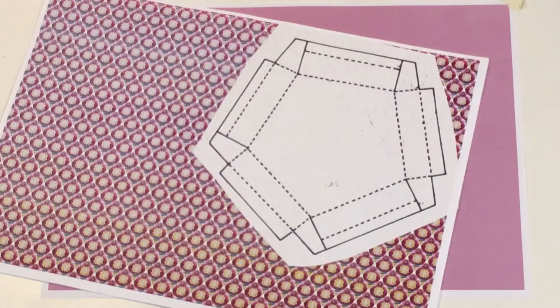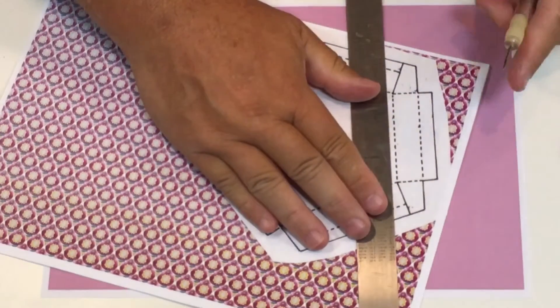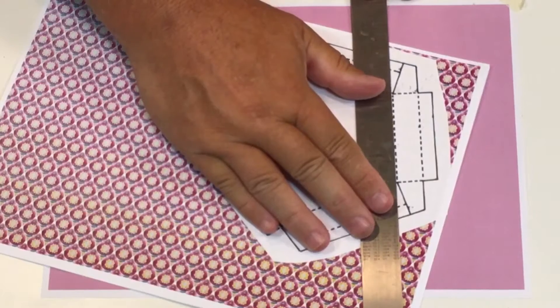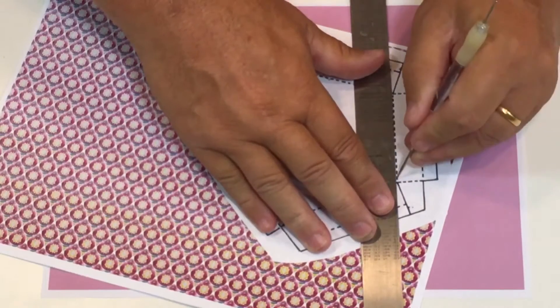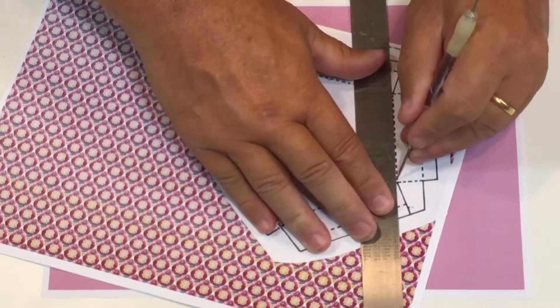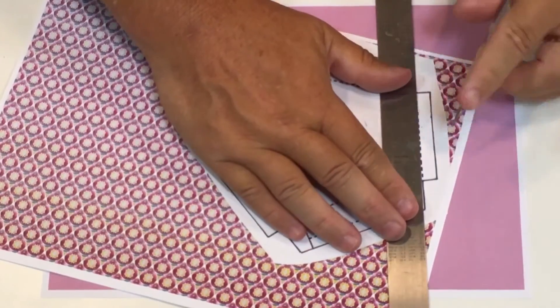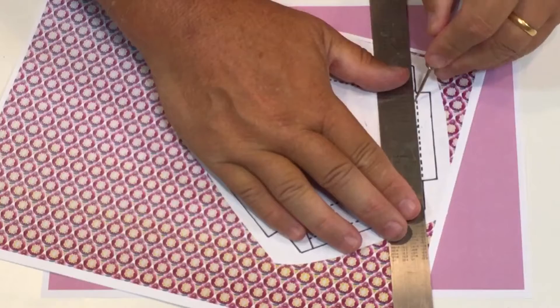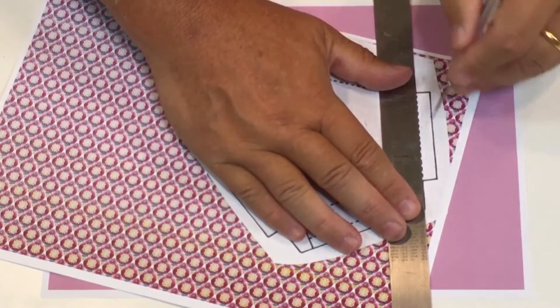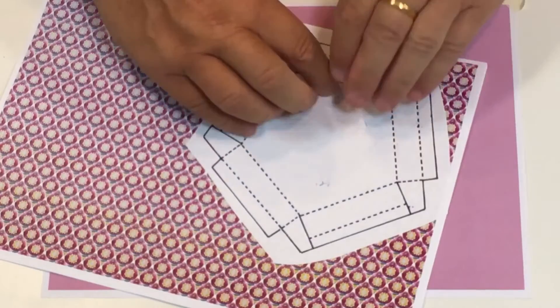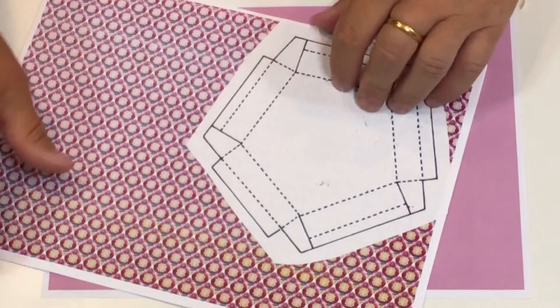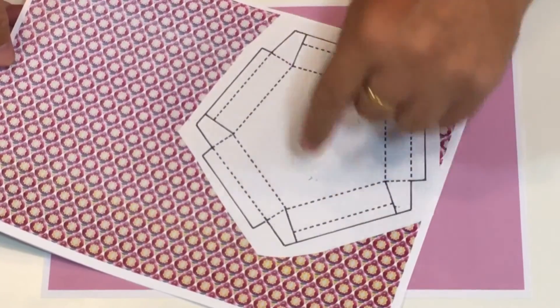And then you take a ruler—wherever the dotted lines are—you can then just give that a little indentation into the card underneath. So you just go around, first of all just scoring down a line to create the indentation of all the design.